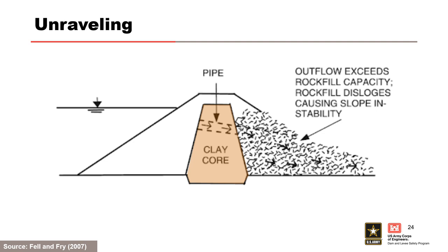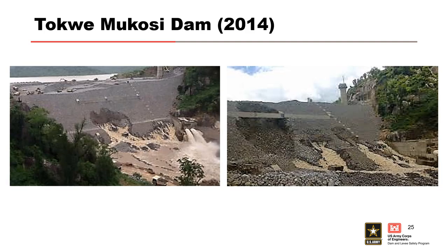Unraveling refers to progressive removal of individual rocks by large seepage or leakage flows through a downstream rock fill zone. In reality, rock fill has a large discharge capacity and a number of dams have survived flows greater than one cubic meter per second. The 300-foot-high concrete-faced rock-filled dam on the Tokwe River in Zimbabwe, begun in 1989, experienced extreme flooding when the rock fill embankment was 60% complete at about 200 feet height. The water level rose to within 5 feet of the existing crest, and flood waters passed through the dam for two weeks without failure. The downstream rock fill slopes unraveled locally, but construction continued throughout flood conditions, and as the flood receded, the rock fill was restored and repaired.